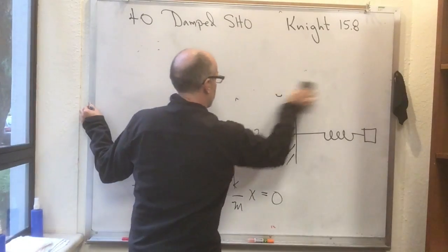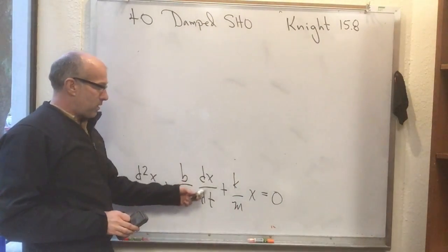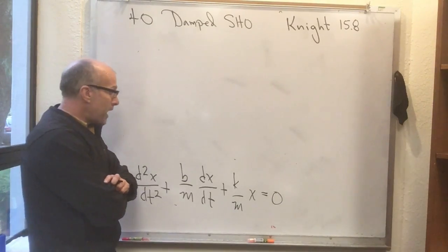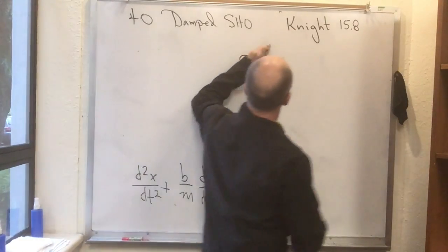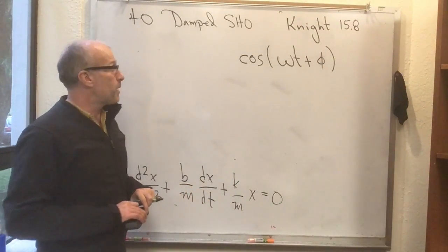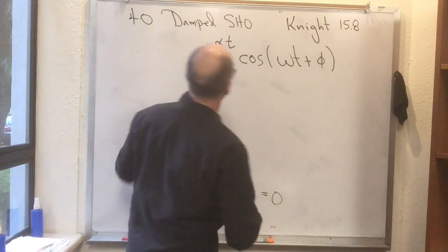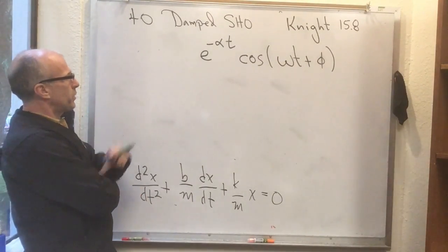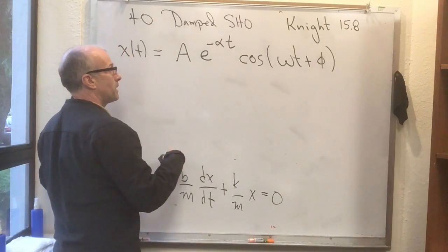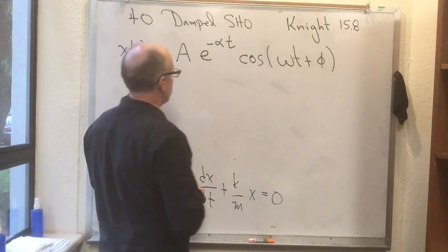Now as usual with differential equations, it's a bit much to actually try to derive the answer. The way you always get it is by guessing the answer. Now this dx/dt term causes the motions to get smaller with respect to time. So you might imagine that in addition to the oscillating term that you originally had, which was A cos(ωt + φ), in addition to the oscillating term, you might have some function that gets smaller with time. And a function that gets smaller with time is e^(-αt). So there's a guess.